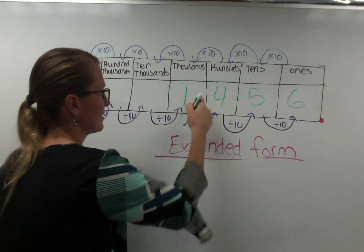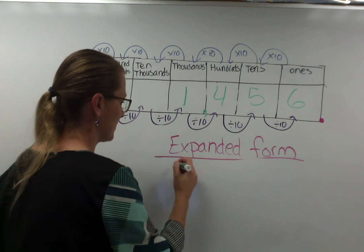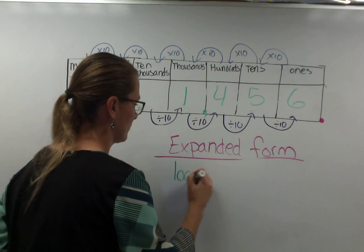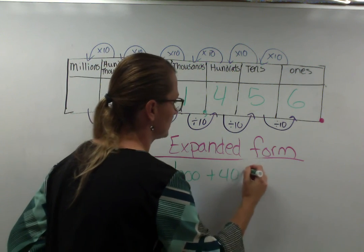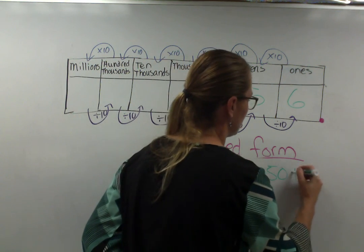Expanded form, I would write the value of each number, but now we're going to up it a notch. 1000 plus 400 plus 50 plus 6.